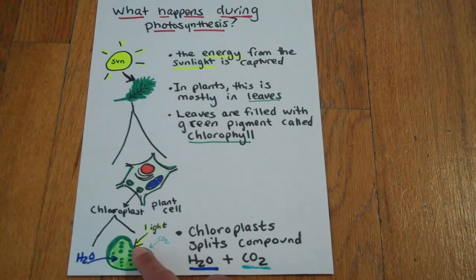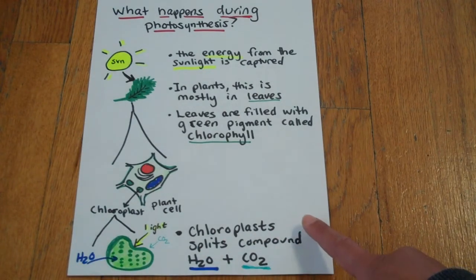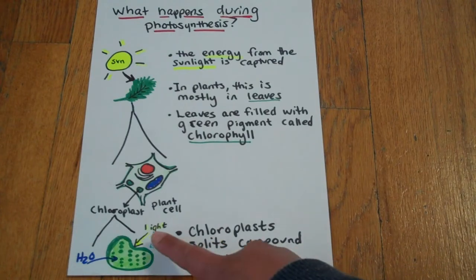The light goes in and a plant also takes in carbon dioxide and water, or H2O. And the chloroplast splits the compound water and carbon dioxide with the light energy.